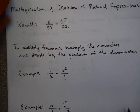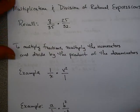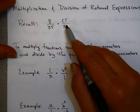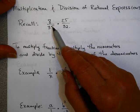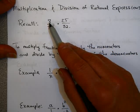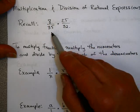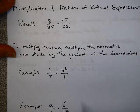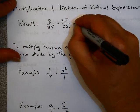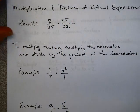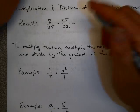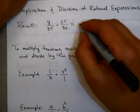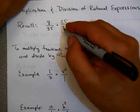Let's take a look back to arithmetic. Remember how to do a problem like this in arithmetic? I just multiply the numerators and multiply the denominators. Now, if you had to do this without a calculator, 8 times 25 and 35 times 32 were pretty difficult.